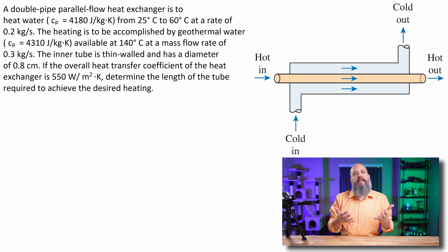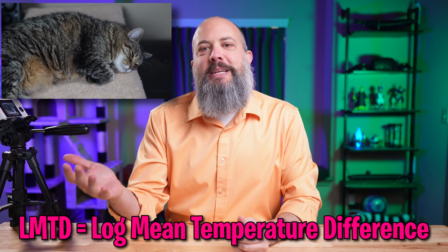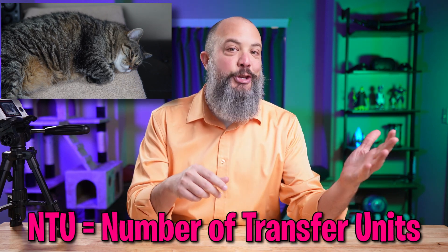This is a double pipe heat exchanger, meaning that you have a pipe inside of another pipe. You've got flow from the hot going inwards into the cold. There's two main methods that can be used to solve heat transfer heat exchanger problems: LMTD, log mean temperature difference, and NTU.